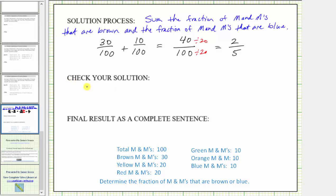The next part of the problem-solving process is to check the solution. Checking the given information, notice how there are a total of 100 M&Ms, 30 of which are brown and 10 of which are blue, so this sum is correct.